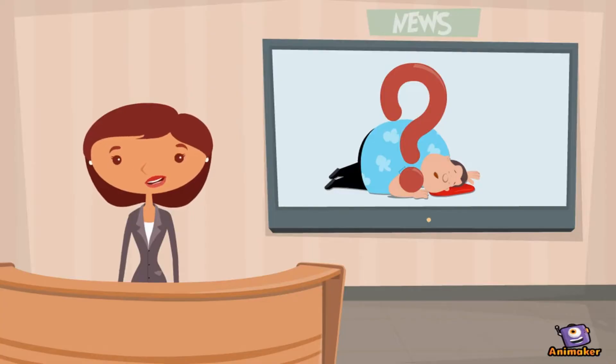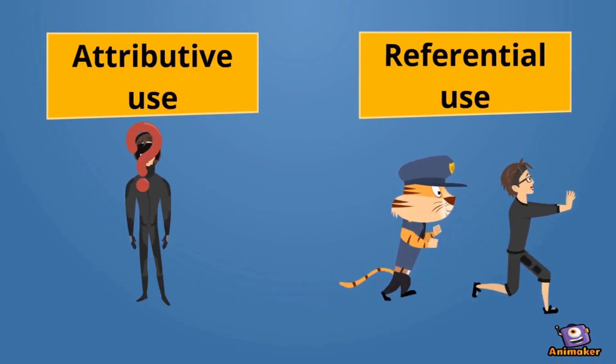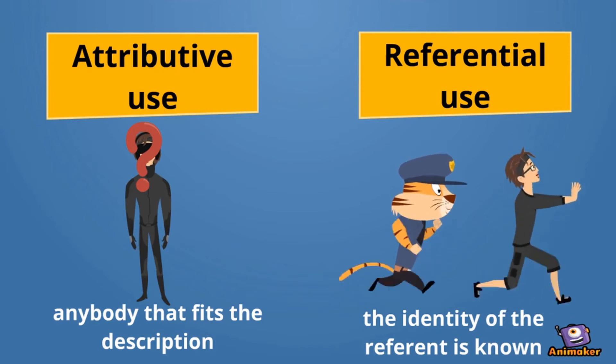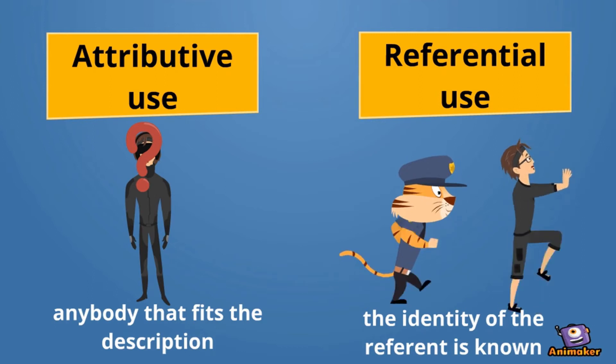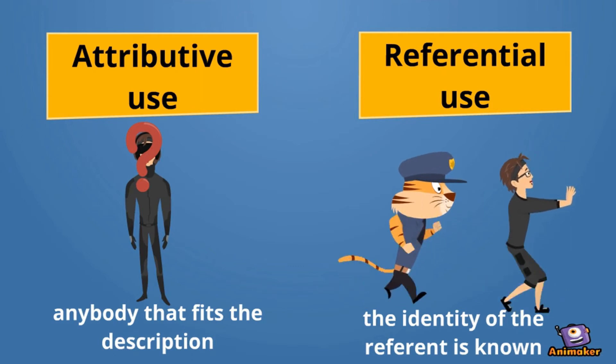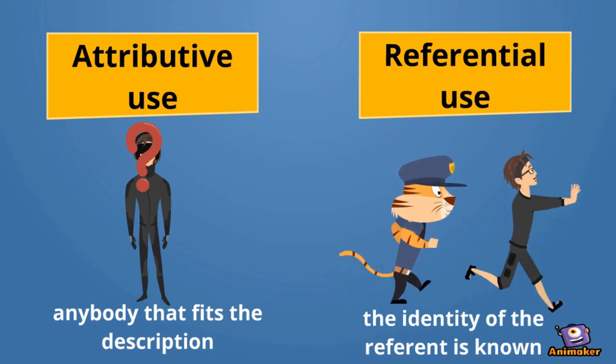If we want to refer to something, the idea is already had in mind. Here comes the distinction between attributive use and referential use of referring expression. For example: the local police reported no sign of the killer. If the killer has been seen, whatever he or she escaped, this would be a referential use, because the speaker knows that the referent exists. If the identity of the killer is completely unknown, this would be an attributive use — the speaker does not know the referent but means anybody who fits the description of the killer.